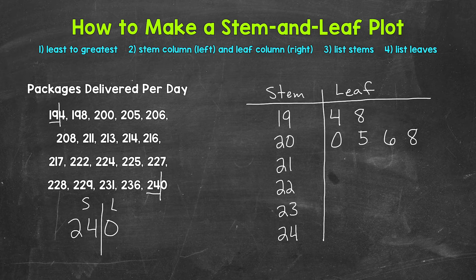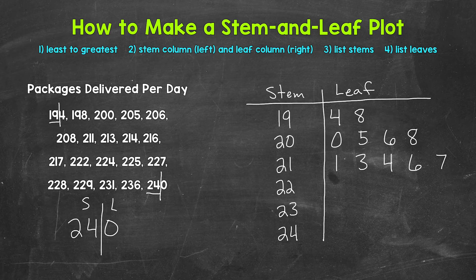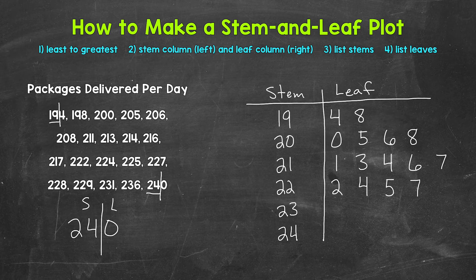Next we have 211 — we move down to the stem of 21 with a leaf of 1. Then 213, leaf of 3. Then 214, leaf of 4. Then 216, leaf of 6. Then 217, leaf of 7. Then 222 — stem of 22, leaf of 2. Then 224, leaf of 4. Then 225, leaf of 5. Then 227, leaf of 7. Then 228, leaf of 8. And then 229, leaf of 9.